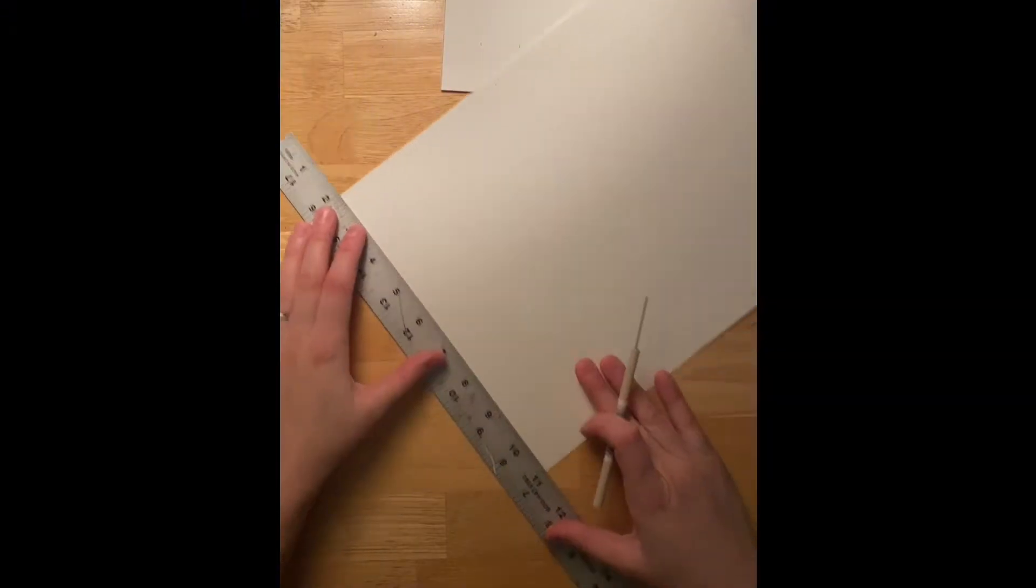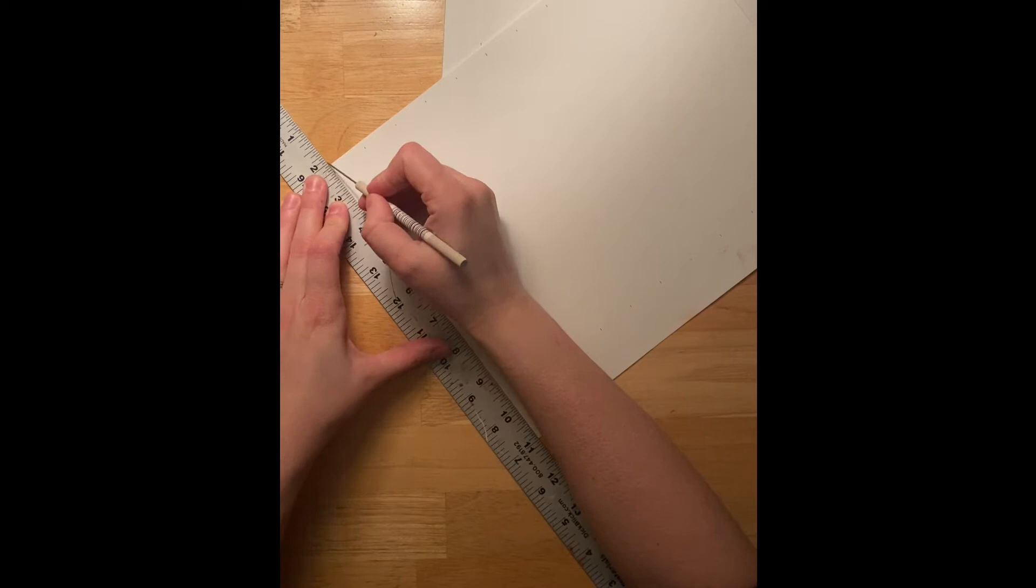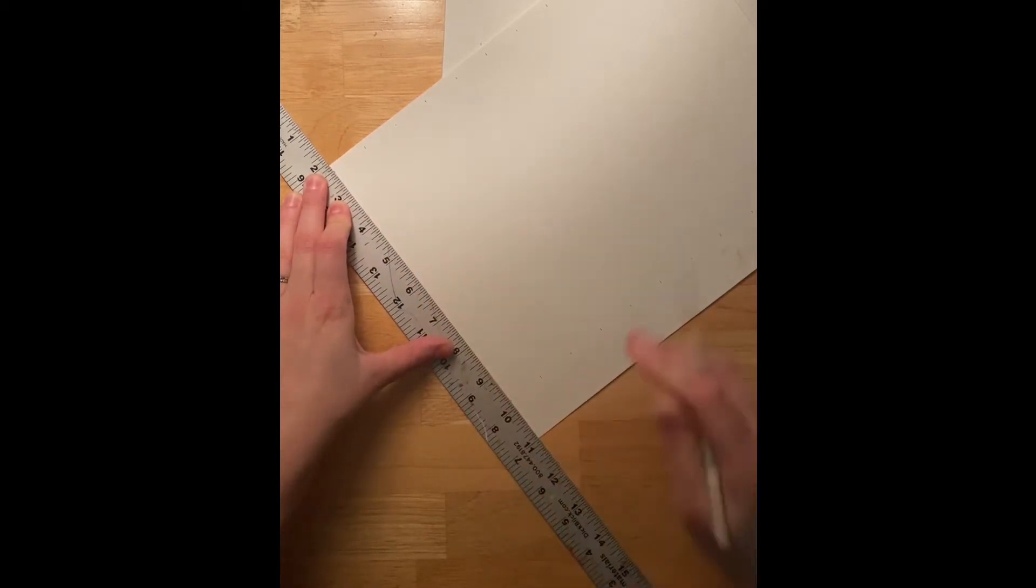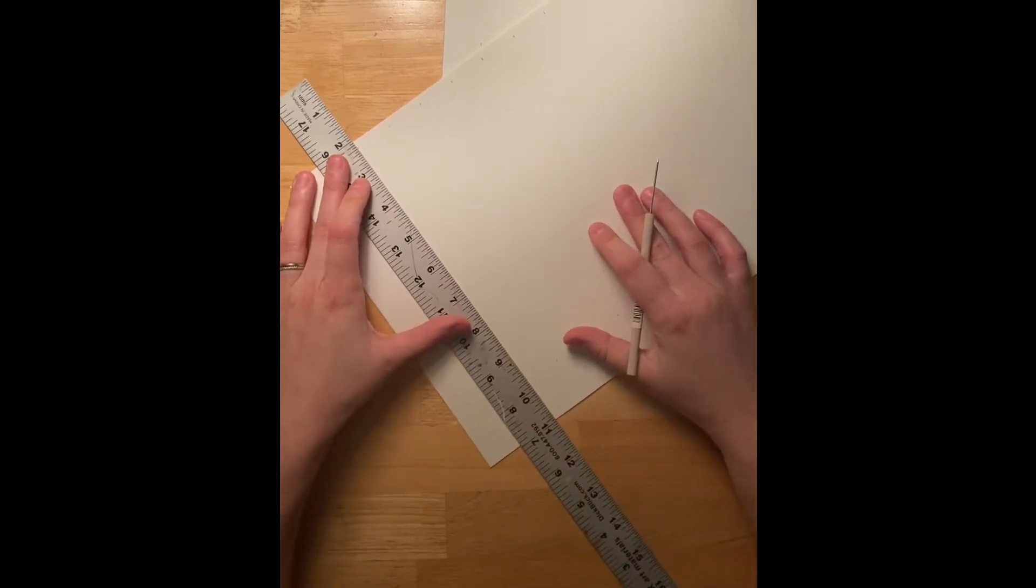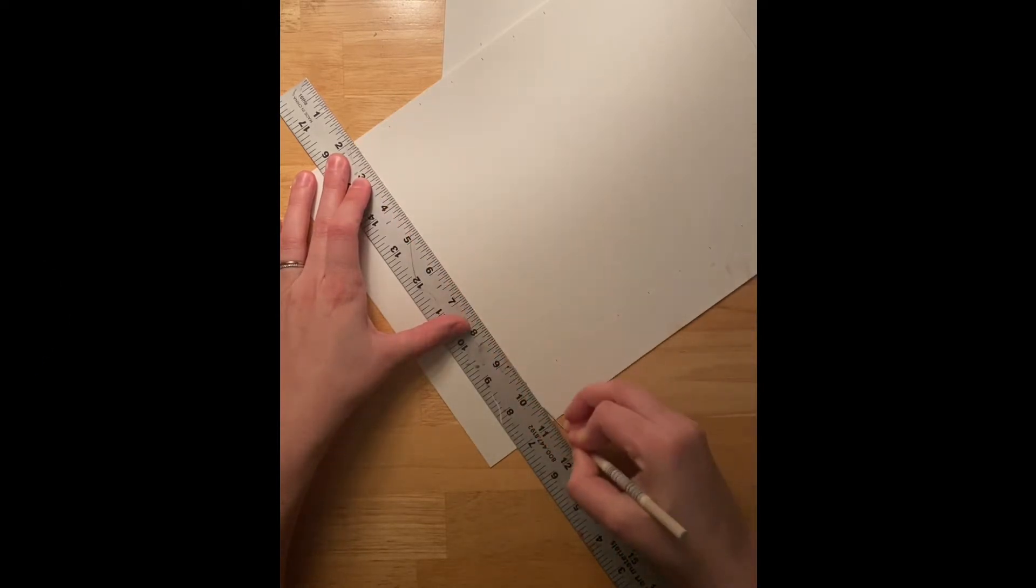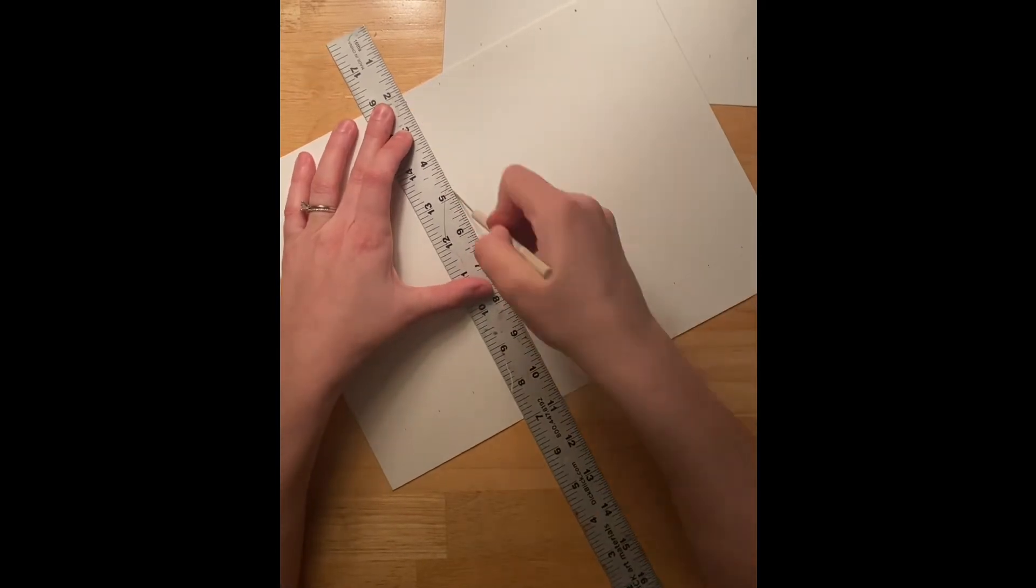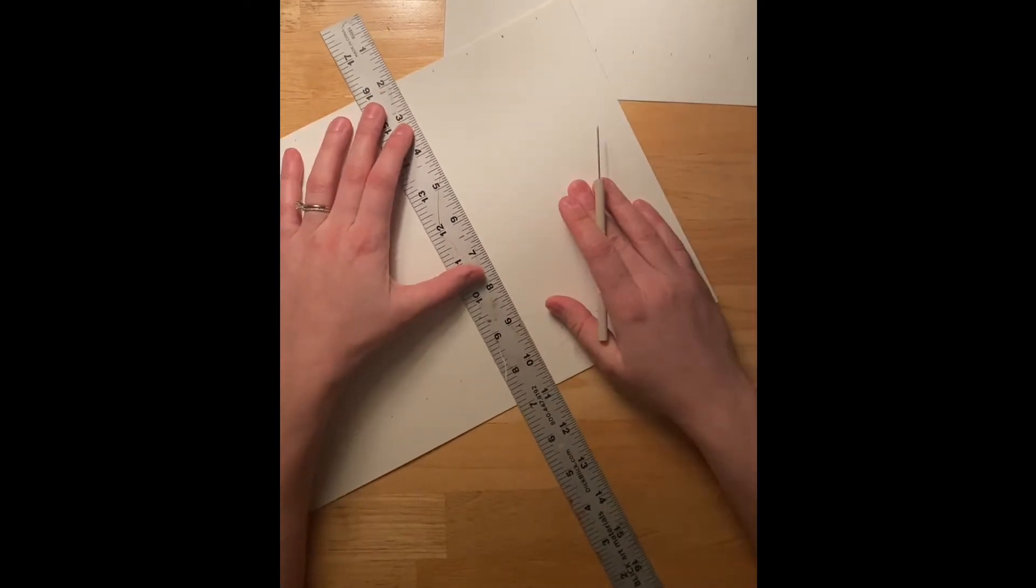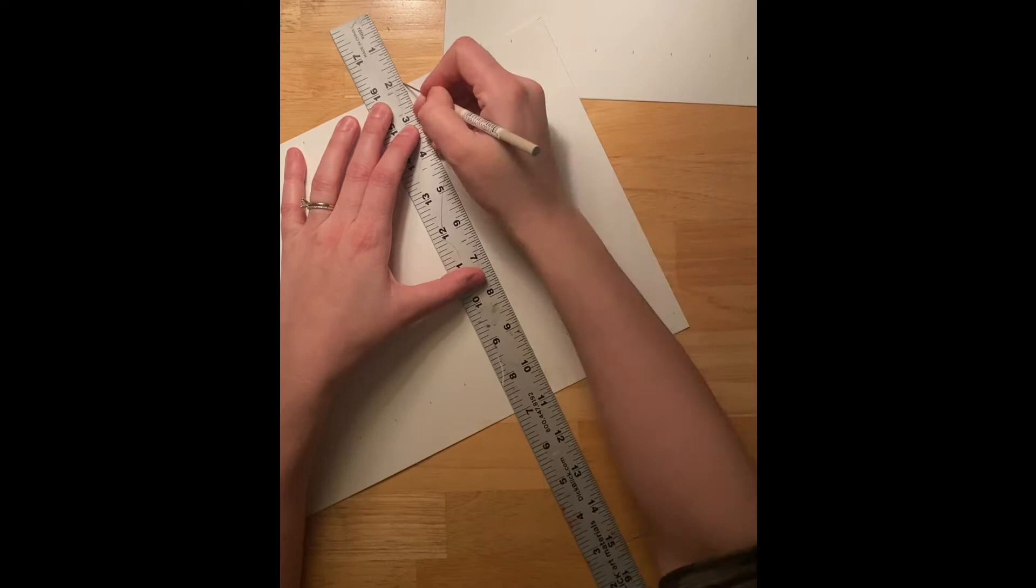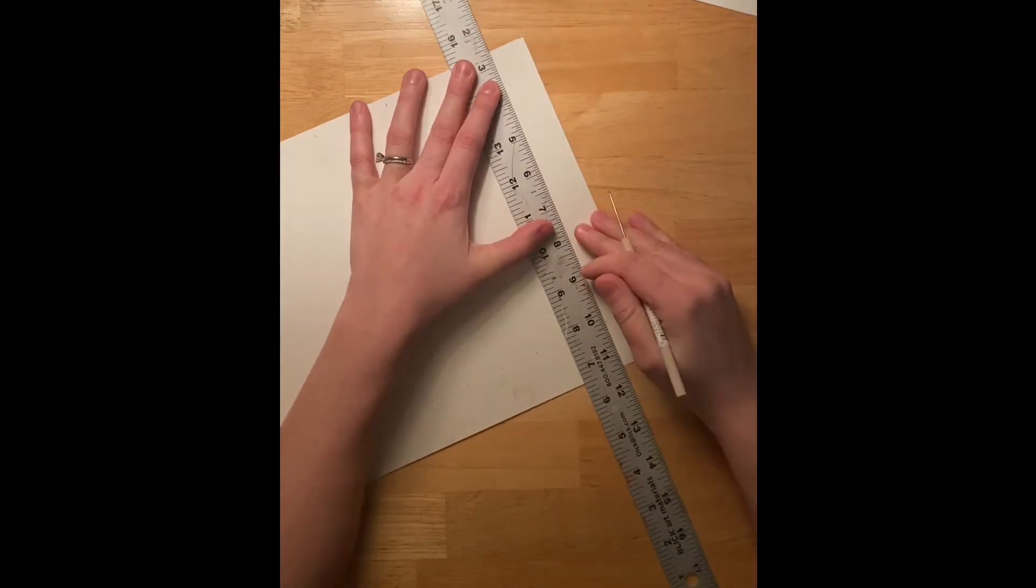Using that handy ruler once again, line those tick marks up so that you're getting a straight up and down line and using that needle tool, drag it ever so gently but also firmly across the page. What you're trying to do is score the paper. This is going to make it very easy to get a nice crisp fold. Do this across all of the tick marks that you have created on both pieces of paper.